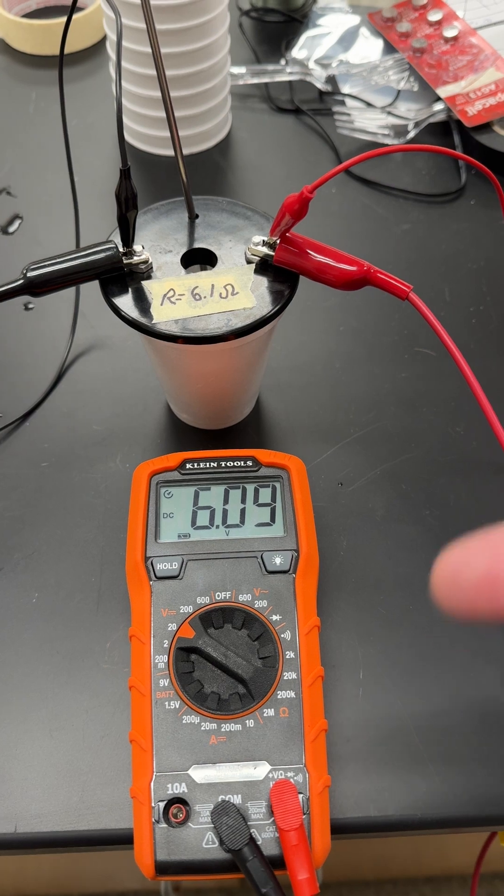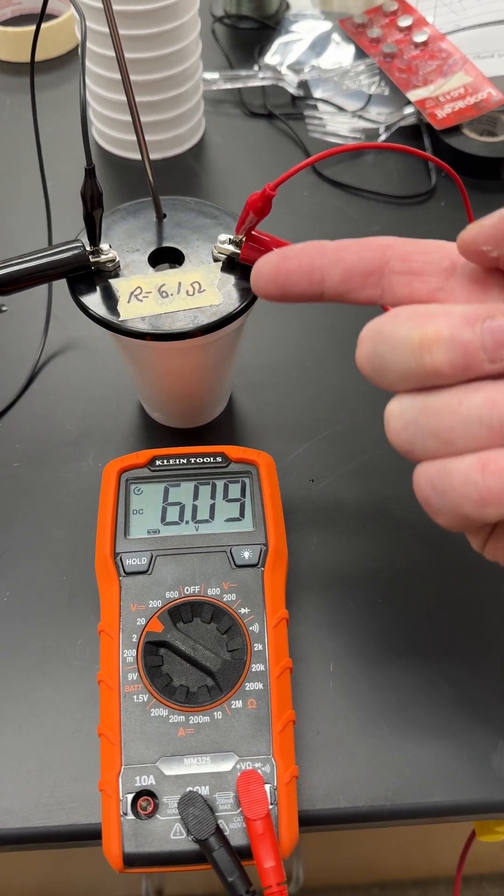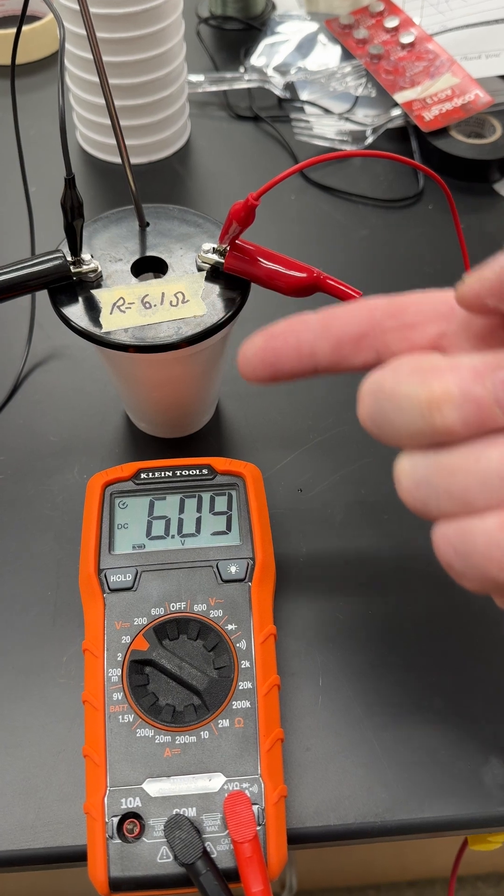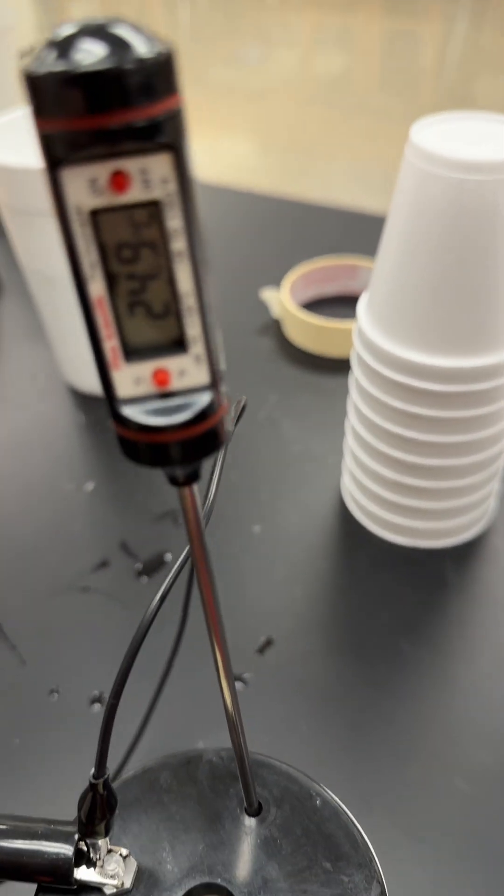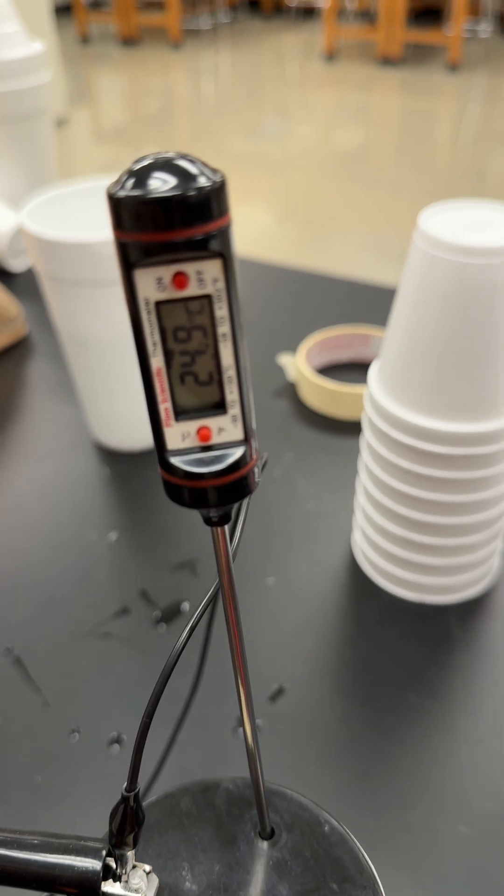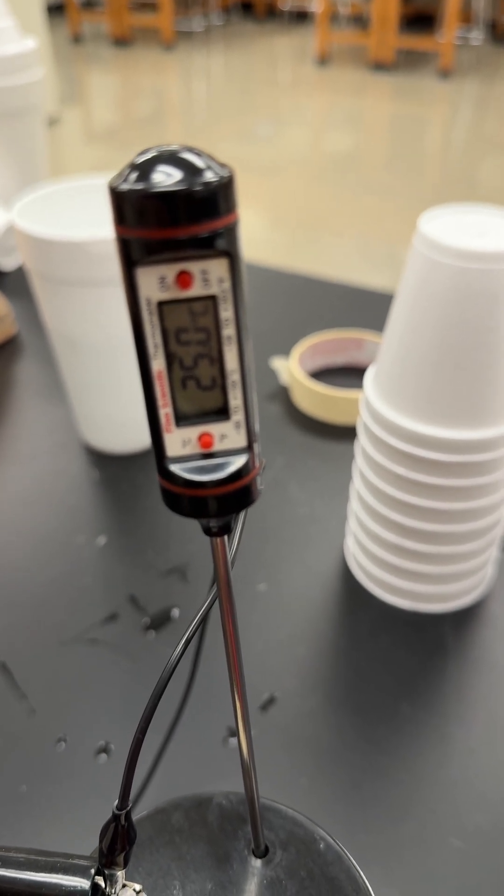You want to dial up a voltage that is about the same as your resistance of your heating element. And you're going to want to have a thermometer so that you can record temperature changes.